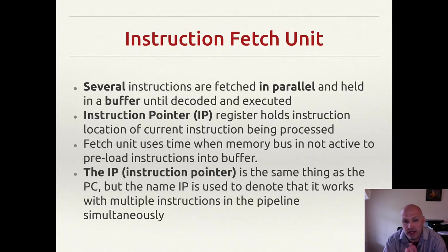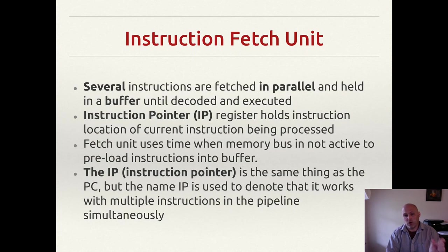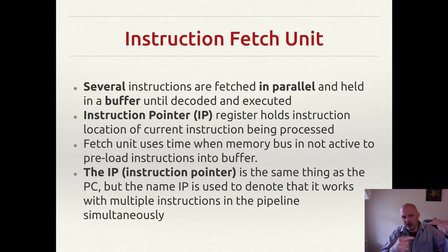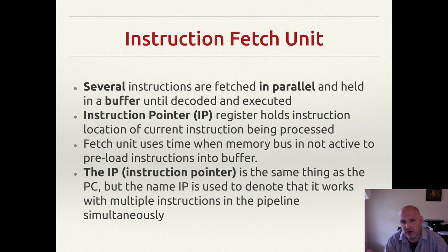Instead, the instruction fetch unit gets many instructions in the same cycle — maybe 100 instructions at once — kept in a buffer that gets decoded as used. To handle this, we change the name from program counter to instruction pointer, because instead of just having one address to fetch, we now have a buffer. The instruction pointer holds the address of the current instruction being processed. Once we have this in place, we can decode and pass information to the execute units as needed.